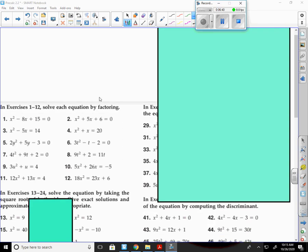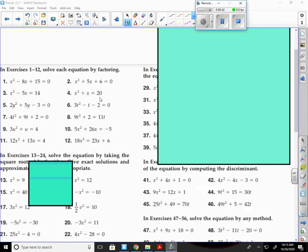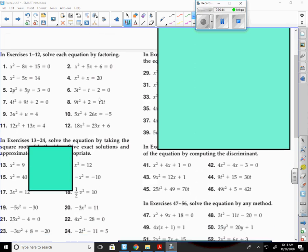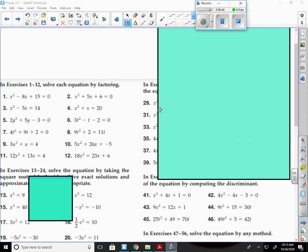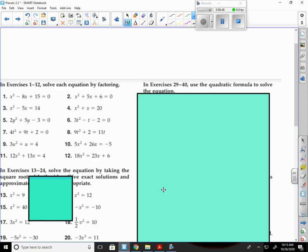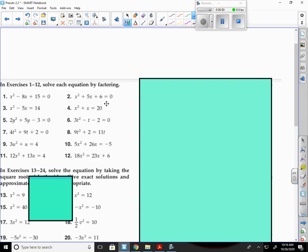Let's pull some examples out here. Just as kind of a review for the whole section. Let's pull number 4. x squared plus x equals 20. First thing we need to do is get this 20 over to the other side. x squared plus x minus 20 equals zero.